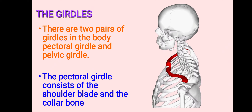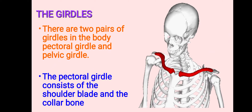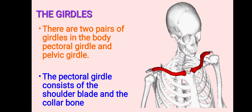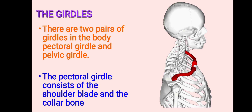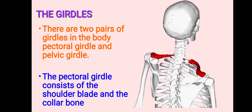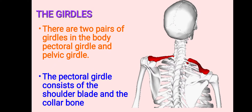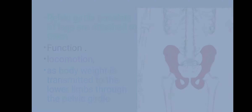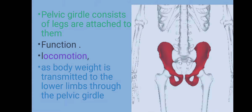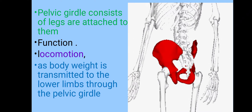Good morning class. In the previous lesson we have learned about girdles. We have come to know that there are two pairs of girdles — the pectoral girdle and the pelvic girdle.